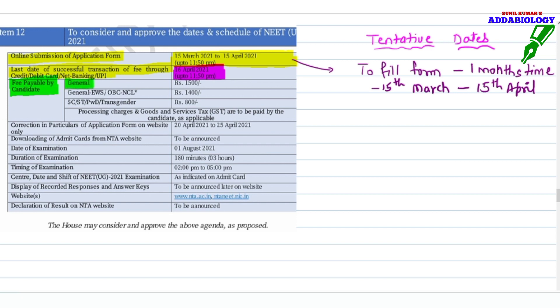The fees that you need to pay - for general category it is 1500, for general EWS OBC it is 1400, for SC/ST transgender it is 800. The taxes will be charged extra from the candidate.